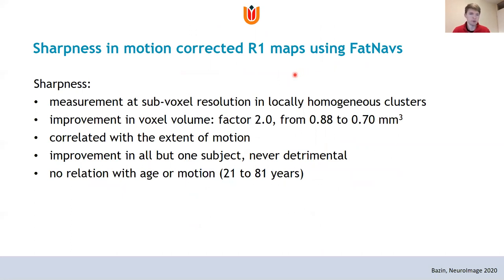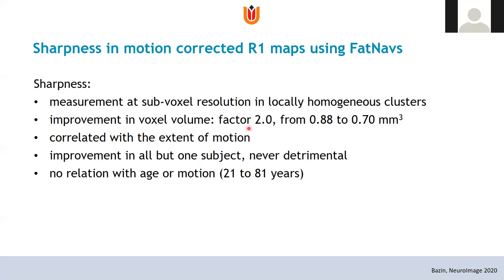This gives us a tool — a measure to use in other applications to actually measure the sharpness in motion-corrected data. The apparent resolution as measured using this approach improves from 0.88 to 0.7 mm³, which is a factor of two reduction in voxel volume. This improvement is visible in our cohort in all subjects but one and is never detrimental. Motion correction matters, and now we have a measure to actually quantify this.